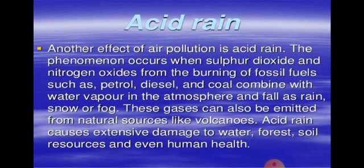Now about acid rain: the burning of fossil fuels like coal and oil in factories, thermal power plants, oil refineries, and petrol and diesel in motor vehicles produces acidic gases such as sulfur dioxide and nitrogen dioxide. These gases go into the air and pollute it. Sulfur dioxide reacts with water vapor present in the air to form acid, and these acids dissolve in rainwater and fall to the earth in the form of acid rain. Acid rain is rain that contains small amounts of acids formed from acidic gases like sulfur dioxide and nitrogen dioxide.